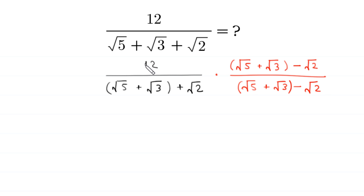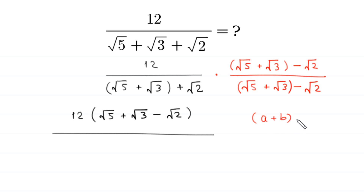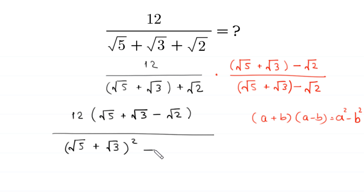In the numerator, we multiply 12 by this expression, giving us 12 times (root 5 plus root 3 minus root 2). In the denominator, we apply the algebraic identity a plus b times a minus b equals a squared minus b squared. This gives us root 5 plus root 3 squared minus root 2 squared.